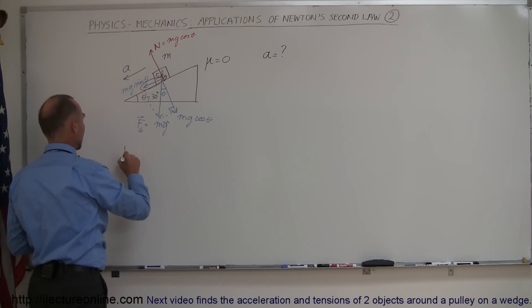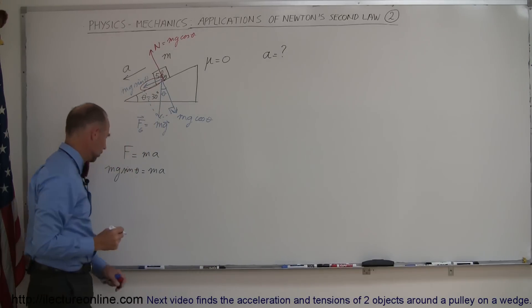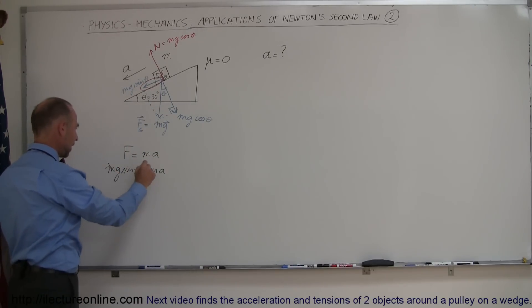So now we'll go to our Newton's second law equation, F equals ma. In this case, F is going to be mg sine theta, so we have mg sine theta equals ma. And of course, we're solving for a, that's the objective right here. So then you see that the m cancels on both sides, and we're left with a equals g sine theta.